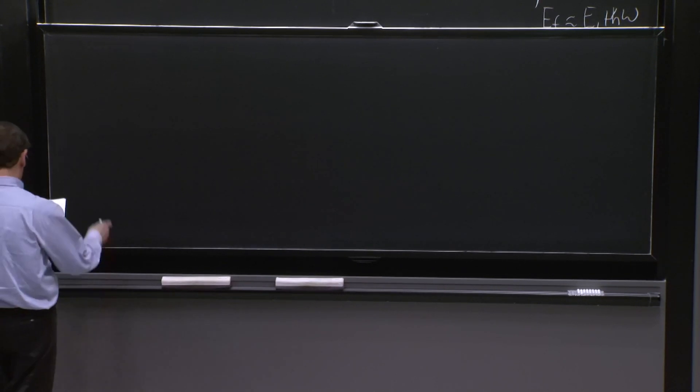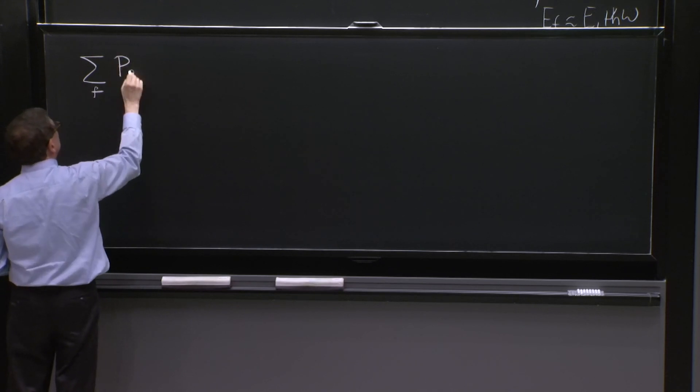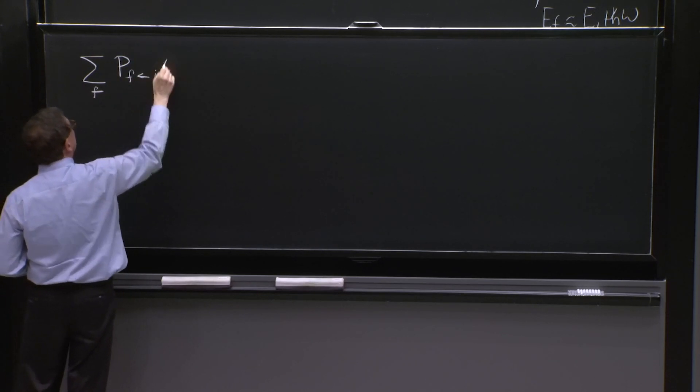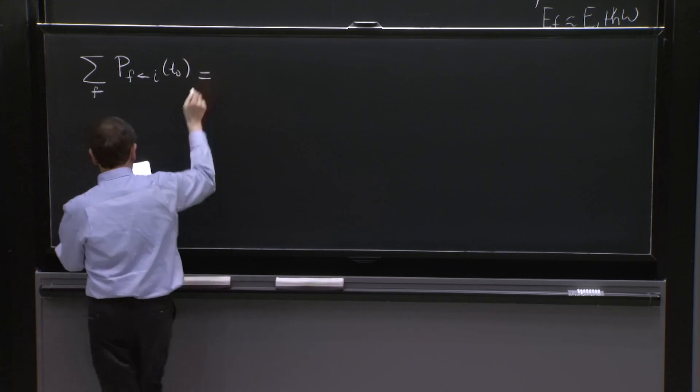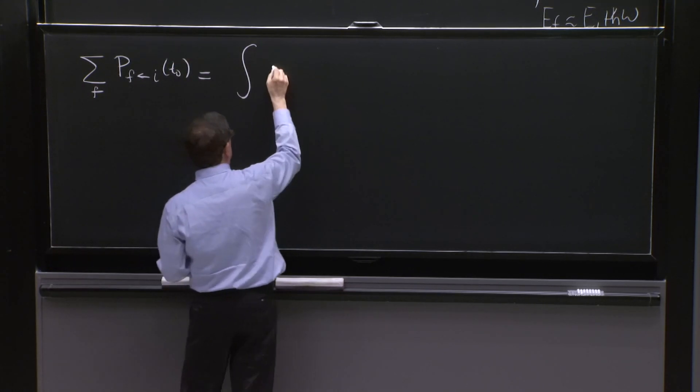So the last step is integrating over final states. So you have the sum over final states of this probability to go to the final state.